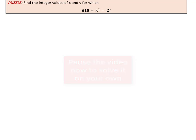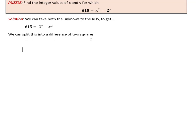Okay, so the first thing we can do here is take all the unknowns on one side. That gives us 615 equals 2 raised to y minus x squared. Looking at this minus x squared gives us an idea that maybe we can express this as the difference of two squares, and it is known that any odd number can be expressed as a difference of two squares. So that's how we are going to split it.